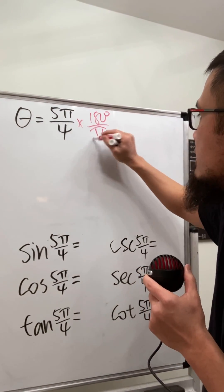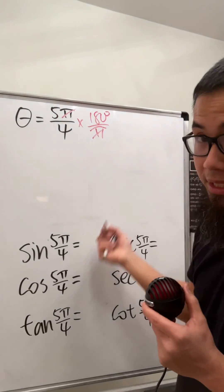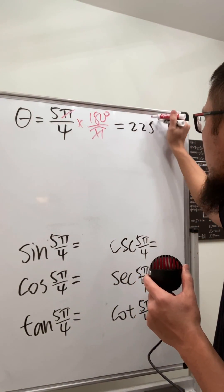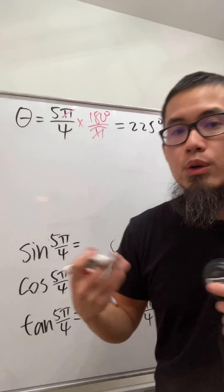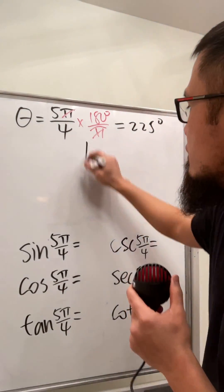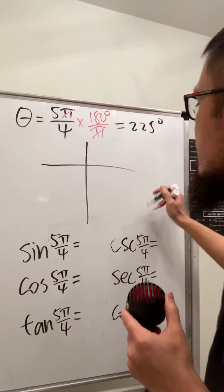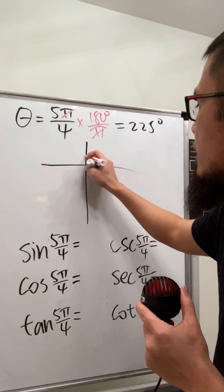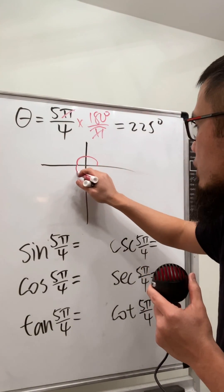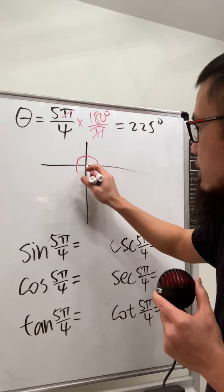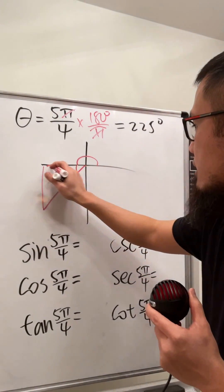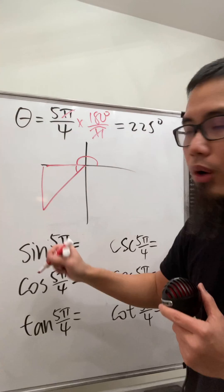Let's multiply 5π/4 by 180 degrees over π — it's easier to deal with degrees. This is going to be 225 degrees. We will use the reference triangle method. From here to here is 180 degrees already.